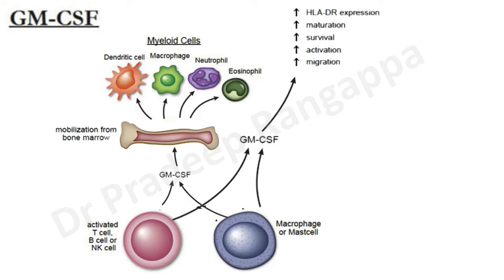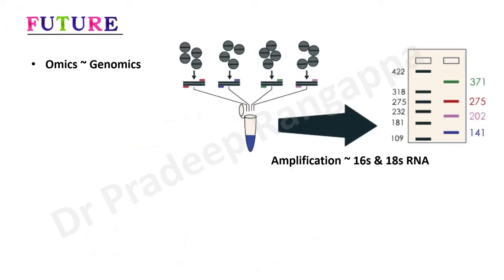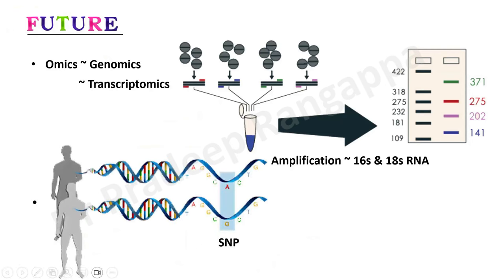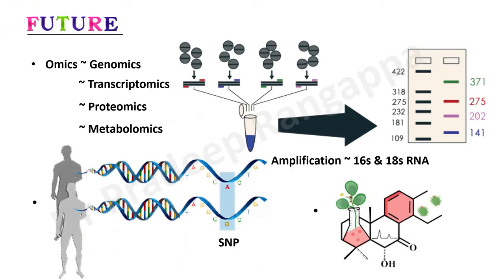The future of biomarkers is in omics. Genomics: multiplex PCR with amplification of 16S and 18S RNA to identify pathogens and causes of sepsis. Transcriptomics: looking at single nucleotide polymorphisms as tools to recognize sepsis. Proteomics and metabolomics: looking at the metabolic profile of sepsis to diagnose, prognosticate, and determine outcomes. Molecular technology — PCR-based, SNP-based, and metabolic profiling — is where we are headed.